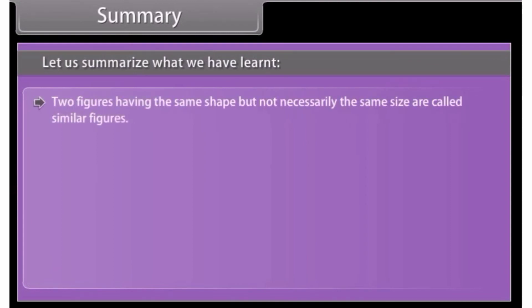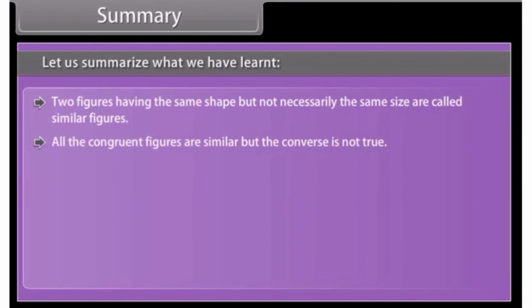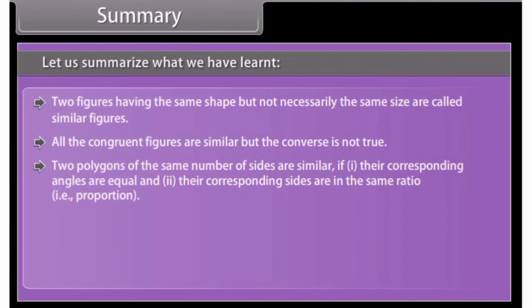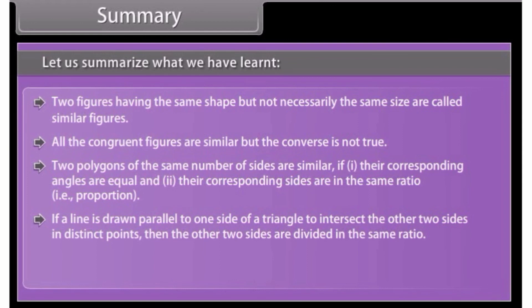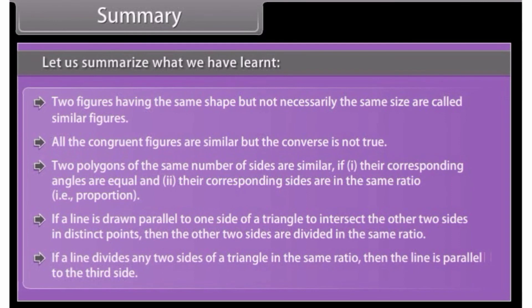Summary: Two figures having the same shape but not necessarily the same size are called similar figures. All congruent figures are similar, but the converse is not true. Two polygons of the same number of sides are similar if: 1. their corresponding angles are equal, and 2. their corresponding sides are in the same ratio. If a line is drawn parallel to one side of a triangle to intersect the other two sides in distinct points, then the other two sides are divided in the same ratio. If a line divides any two sides of a triangle in the same ratio, then the line is parallel to the third side.